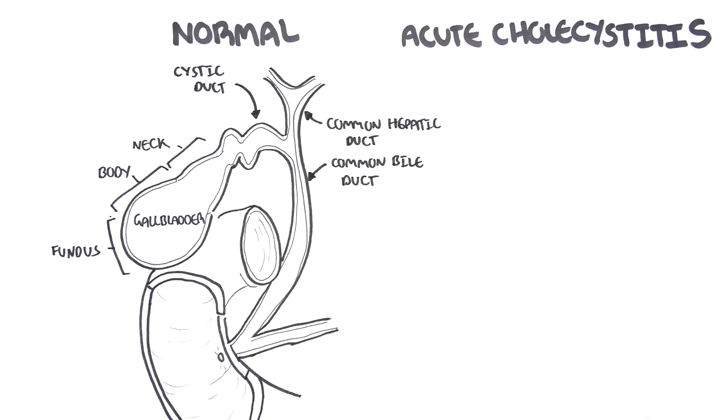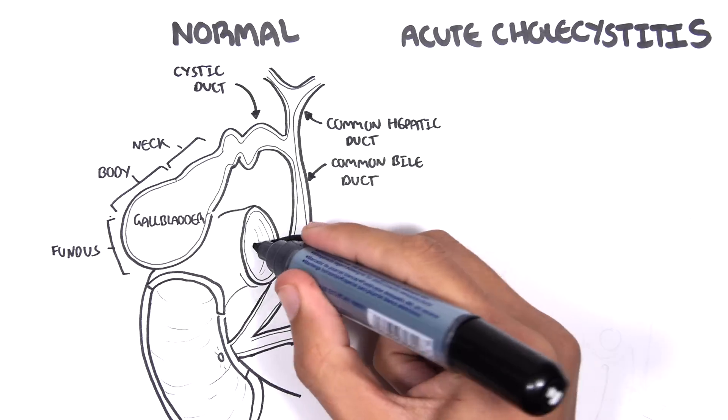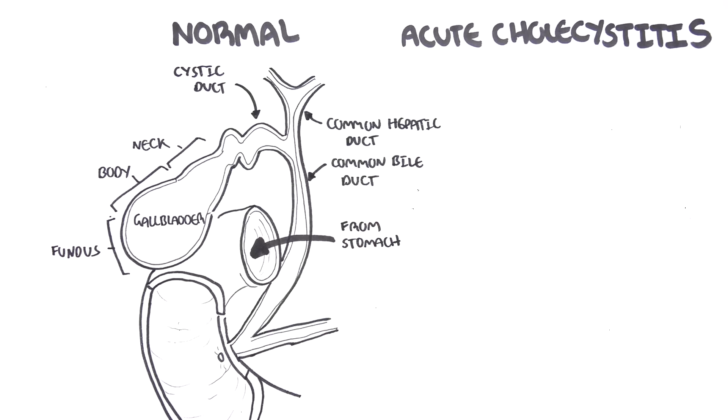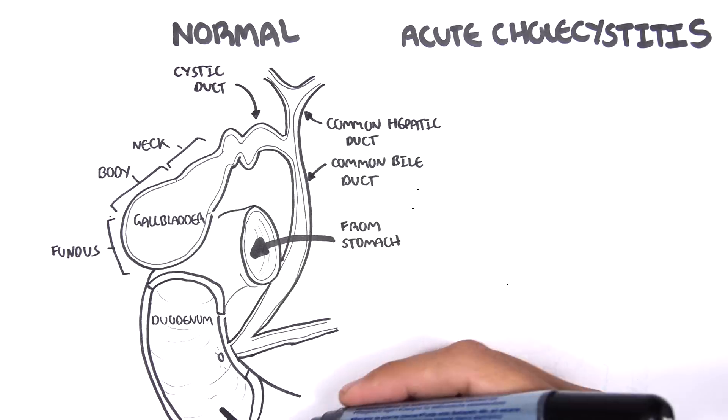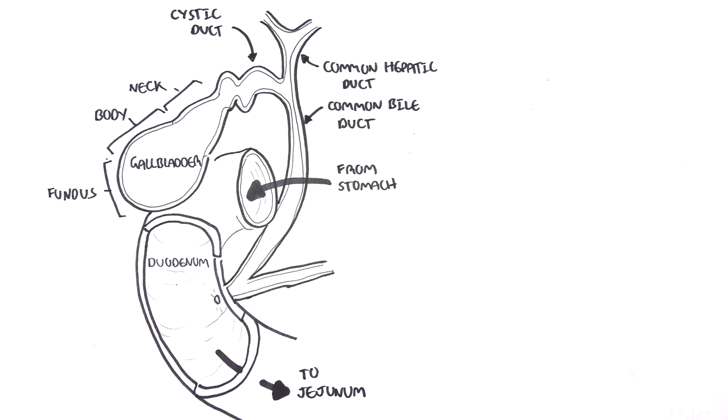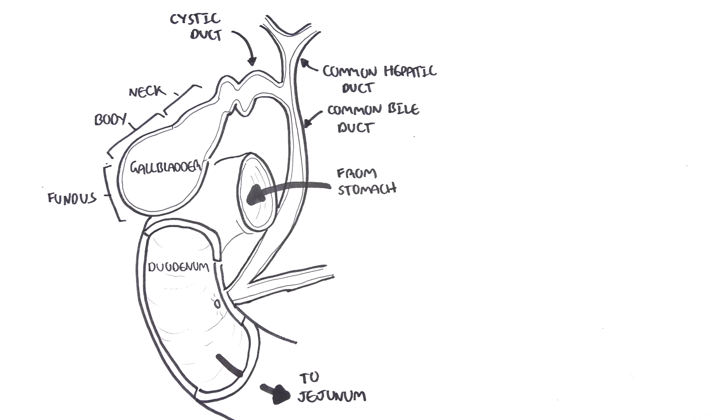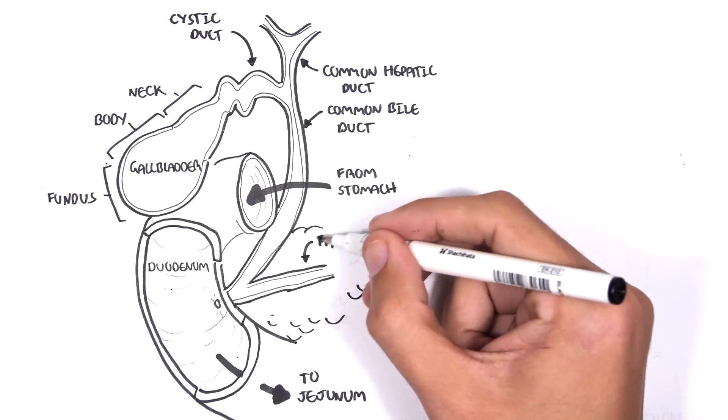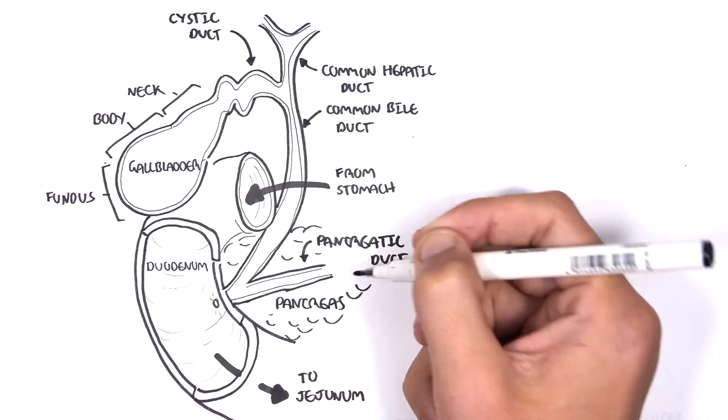Before moving to the pancreas, the stomach actually continues on to the small intestine here, transporting the half-digested food content. The first part of the small intestine is the duodenum. Then the duodenum goes on to the jejunum, which is the second part. Here is the pancreatic duct I was talking about. And here is part of the pancreas.